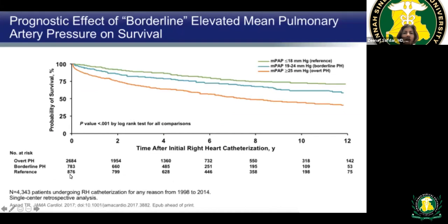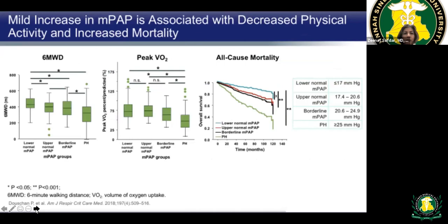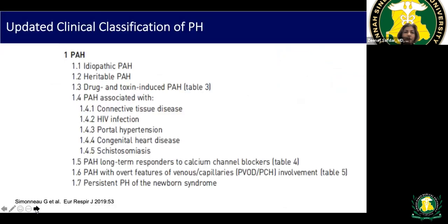The threshold was dropped from 25 to 20 mmHg based on a large study of more than 2,500 patients, showing that patients with mean PA pressure between 19 to 24 mmHg also had poor survival. Normal pressure is less than 18 mmHg. As mean PA pressure increases, walk distance decreases and mortality increases, confirming that pressure above 20 mmHg is harmful.